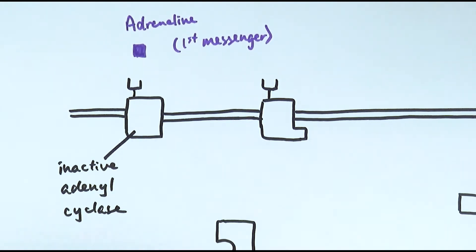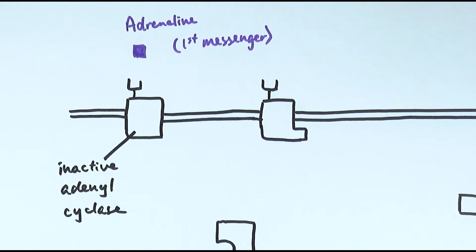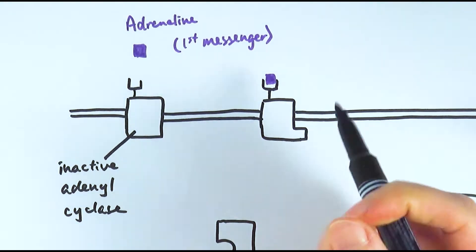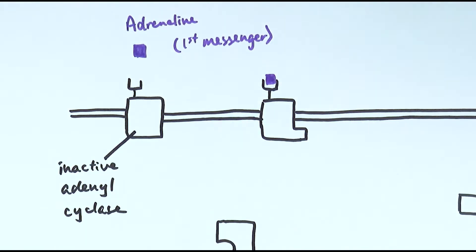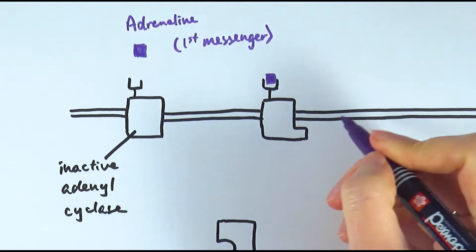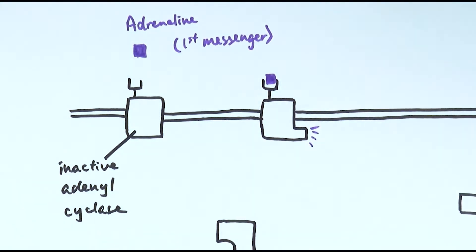At the moment when adrenaline is not bound to it, it is inactive, but once the adrenaline fits into the complementary specific receptor on the adenyl cyclase, it would activate the adenyl cyclase, and usually that comes in the form of changing the shape of the protein, which is usually the case for most proteins.